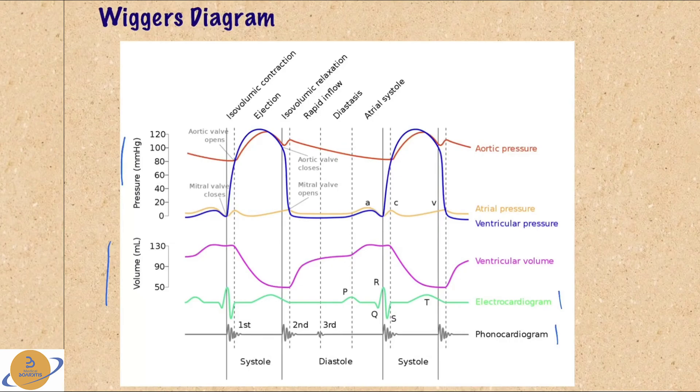We have the curve for ventricular volume, ventricular pressure, atrial pressure, and aortic pressure.